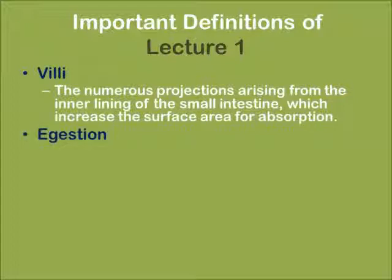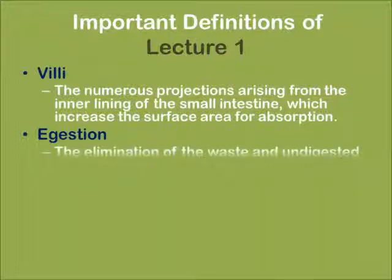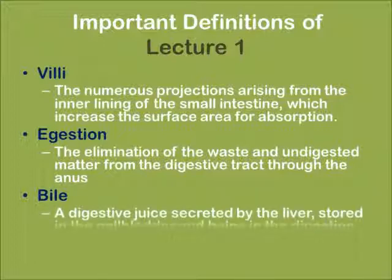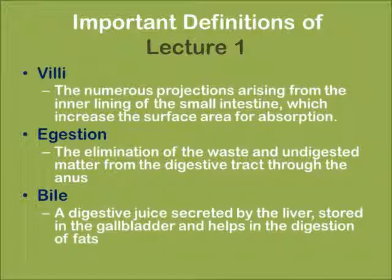Egestion — the elimination of the waste and undigested matter from the digestive tract through the anus. Bile — a digestive juice secreted by the liver, stored in the gallbladder, and helps in the digestion of fats.